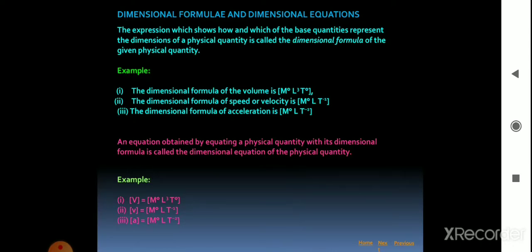A dimensional equation is obtained by equating a physical quantity with its dimensional formula. By using the dimensional formula, you get an equation — that is called a dimensional equation. For example, the dimensional equation for velocity is [M⁰L¹T⁻¹], and the dimensional expression for acceleration is [M⁰L¹T⁻²].